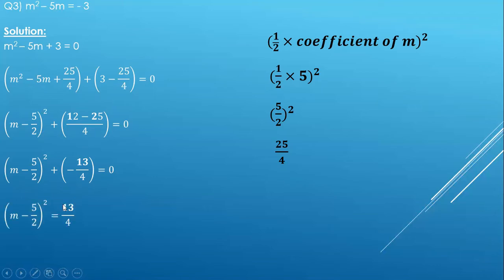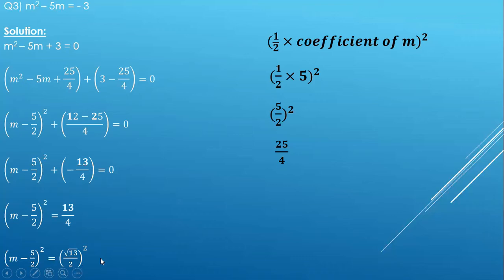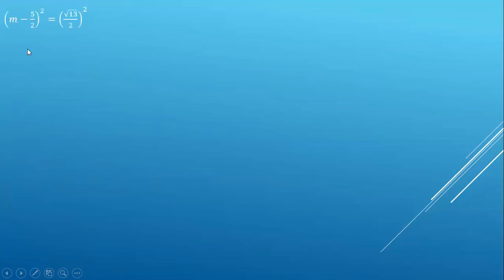We send minus 13 upon 4 to the right hand side, giving us plus 13 upon 4. We then write 13 upon 4 in the form of a square, which becomes root 13 upon 2 the whole square, since root 13 times root 13 equals 13. So we have m minus 5 upon 2 the whole square equals root 13 upon 2 the whole square.